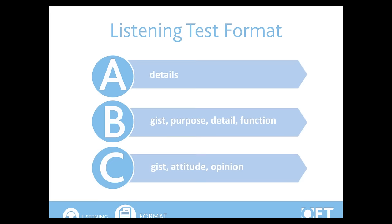Each part of the test has a different testing focus. Part A is testing that you can listen for details. Part B tests a range of listening skills, including listening for gist, purpose, detail and function. Part C also tests a range of listening skills, including listening for gist, attitude and opinion.